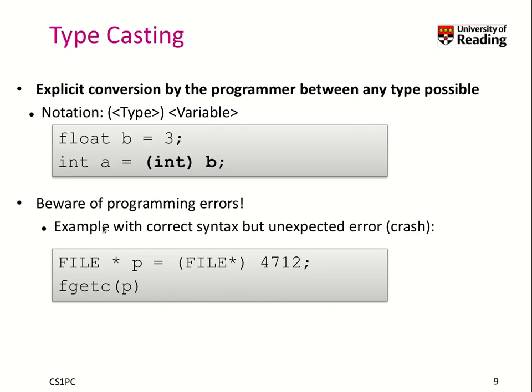When you do explicit typecasting you have to be aware of programming errors. Here is a correct syntax usage that nevertheless leads to an unexpected crash — and you can find all these code examples in our git repository so you can try and play with them. What happens here is a number is interpreted as an object of type 'FILE*', which we'll discuss in a couple of weeks, and then we operate on object 'p' of that data type — which will crash our program.